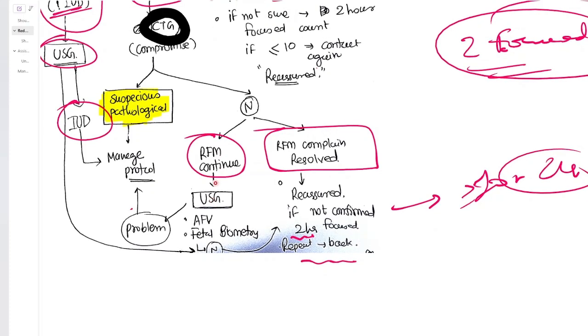But if even after CTG, even after the CTG is normal and even if the lady is still saying that her complaints are not resolved, then you go for the ultrasound. What will you see on the ultrasound? You will see the amniotic fluid volume, you will see fetal biometry. Some doctors want to do the BPP, biophysical profile, although the study says it is not that accurate to diagnose any fetal compromise, but some clinicians do BPP as well. But on the ultrasound, if everything is alright, if the CTG is alright, then you have to counsel the lady that everything looks fine.